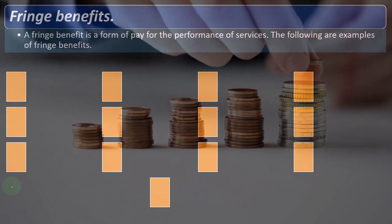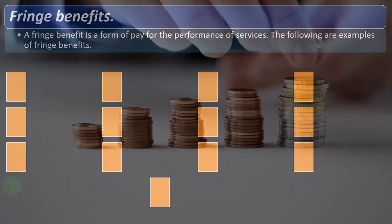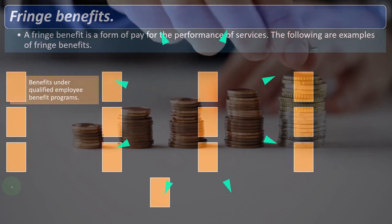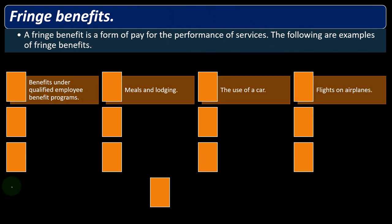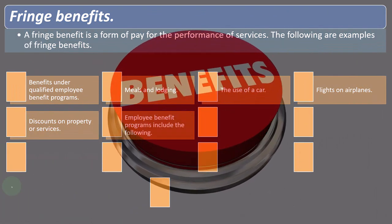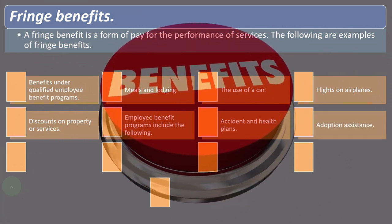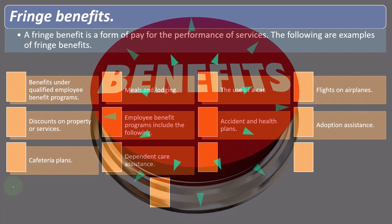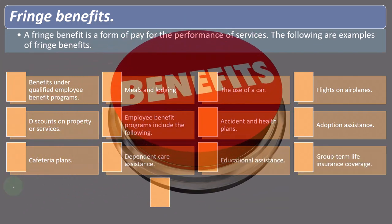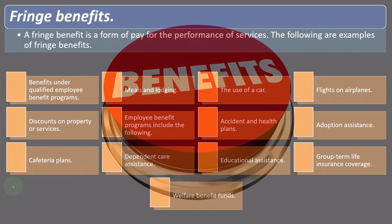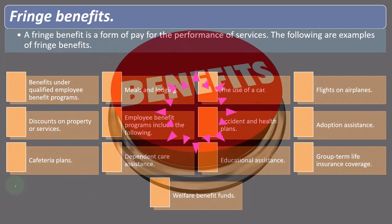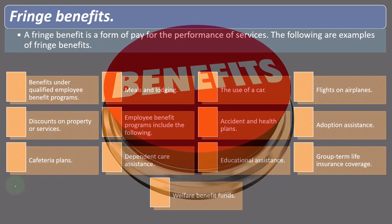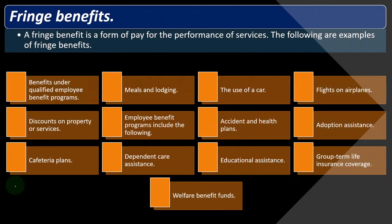A fringe benefit is a form of pay for the performance of services. Examples of fringe benefits include: benefits under qualified employee benefit programs, meals and lodging, the use of a car, flights on airplanes, discounts on property or services. Employee benefit programs include: accident and health plans, adoption assistance, cafeteria plans, dependent care assistance, education assistance, group term life insurance, and welfare benefit funds. Once you have payroll set up, you can dive into some of these different components in terms of what kind of benefits you might be able to provide your employee.